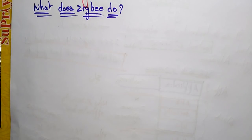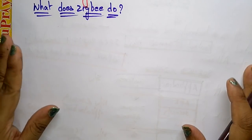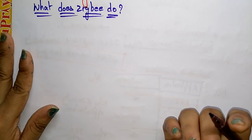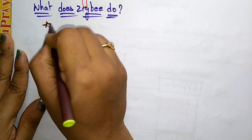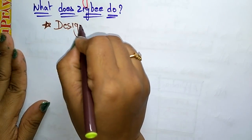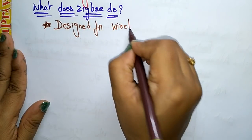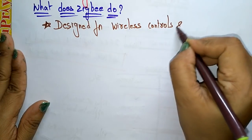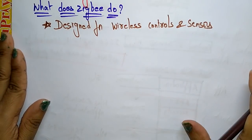Hi students. In the previous video I explained about the ZigBee architecture layers — the different layers that are present in ZigBee. Now let us see what ZigBee will do. The first thing is ZigBee is designed for wireless controls and sensors. ZigBee is mainly used to create wireless controls and sensors operations.